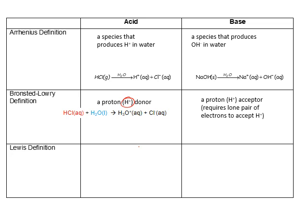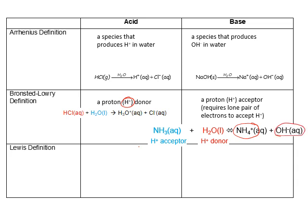In the Bronsted-Lowry definition, a base, on the other hand, is something that accepts a proton. In order for a species to accept a proton, it must have a lone pair of electrons that it can use to make a bond with the H plus. Ammonia is a typical base. How do we show it acting as a Bronsted-Lowry base? We show that it accepts a proton, in this case from water. So here we have ammonia as our proton acceptor and water as our proton donor. Notice what happens to the products of this reaction. Since NH3 is accepting a proton, it becomes NH4 plus. In other words, we've added a proton to it. What happens to the water? When we take away a proton from water, we end up with the hydroxide ion. So ammonia is both a Bronsted-Lowry base as well as an Arrhenius base because its reaction with water forms the hydroxide ion.